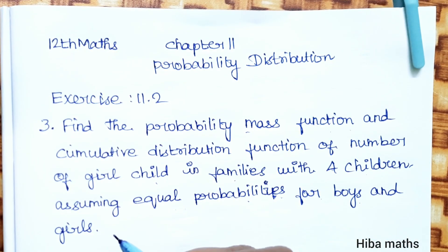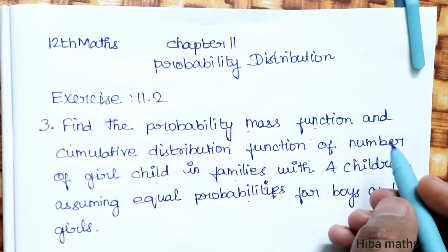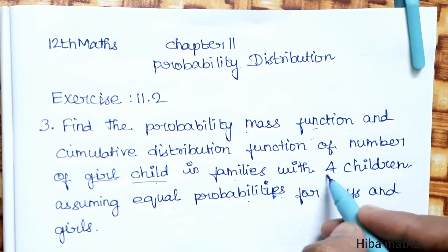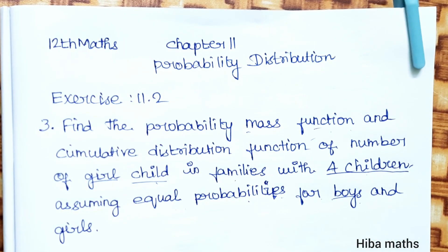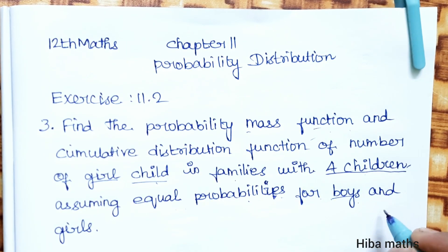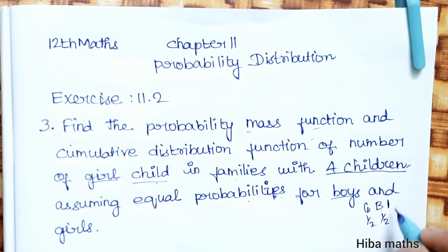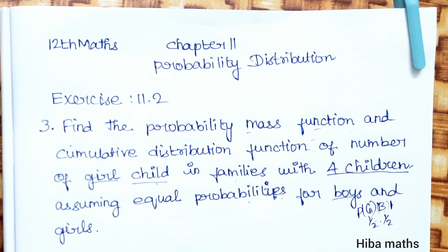We need to find the Probability Mass Function and Cumulative Distribution Function. Let X be the number of girl children in families with 4 children, with boy and girl probability equal. Since the sum of probabilities is 1 and there are 2 outcomes — girl and boy — P(G) = 1/2 and P(B) = 1/2. This is the first thing to understand.